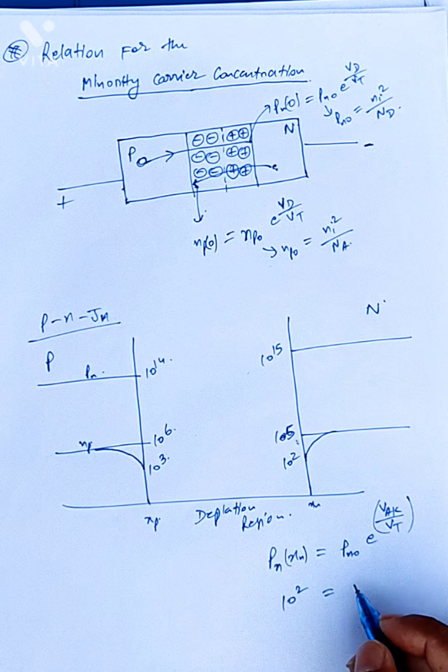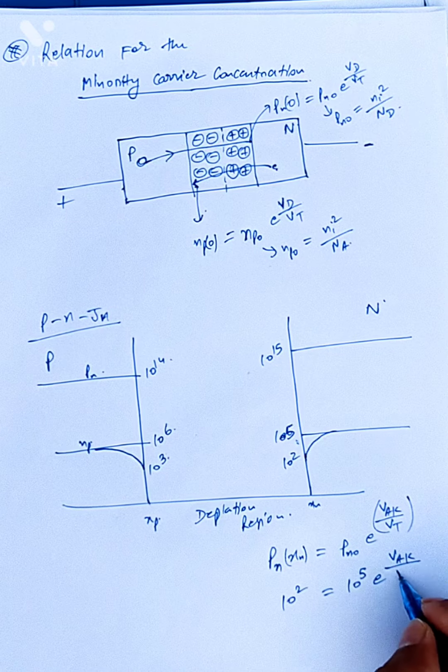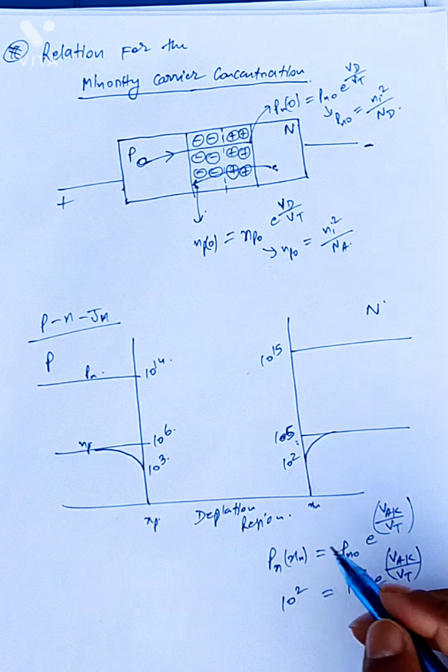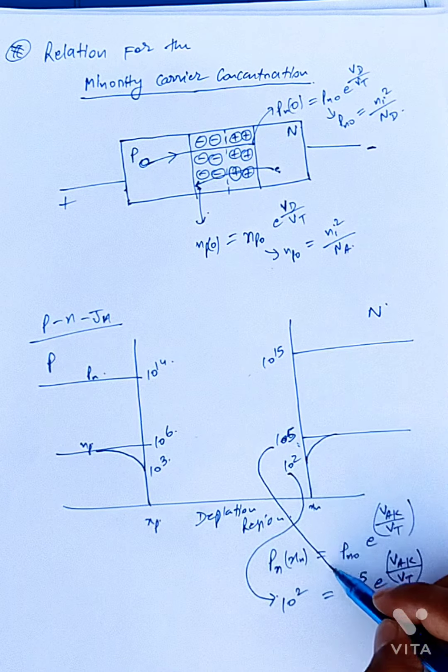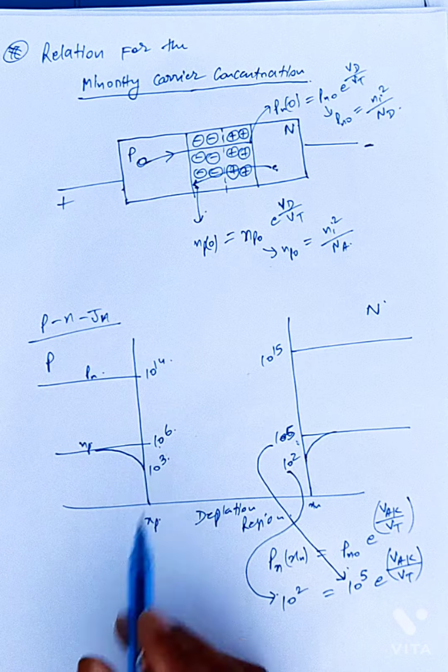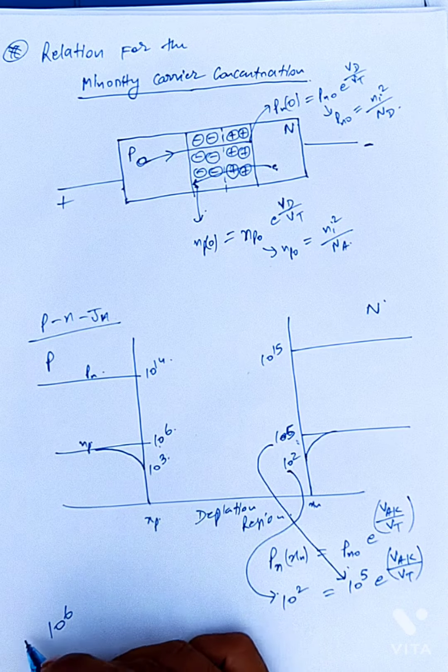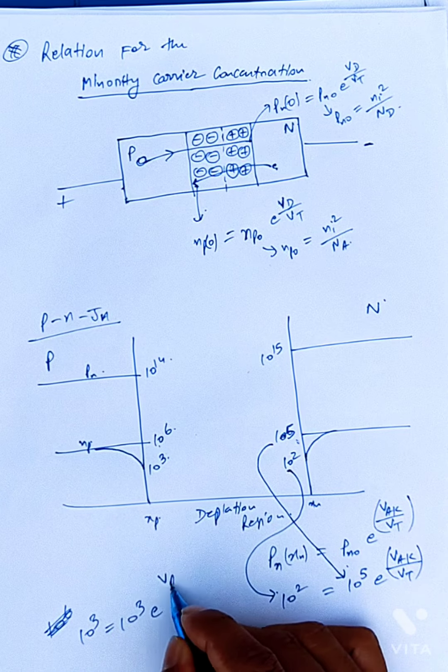So 10 to the power of 2 equal to 10 to the power of 5 e power V_A upon kT e to the power of 1. I will keep the same thing, a 10 to the power of 6 and a 10 to the power of 2.